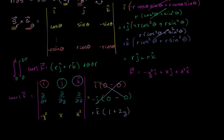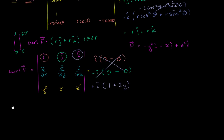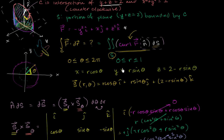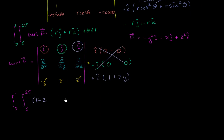Going back to the integral, we rewrite it with r going from 0 to 1 and theta going from 0 to 2π. Curl of f has simplified to 1 plus 2y, and writing y in terms of parameters — y was r sine theta — so it's 1 plus 2r sine theta, times k. And we're going to take the dot product of that with r times j plus r times k, dθ dr.